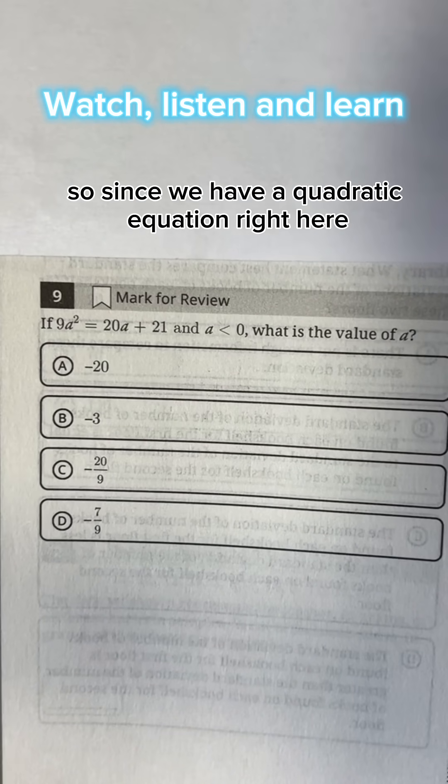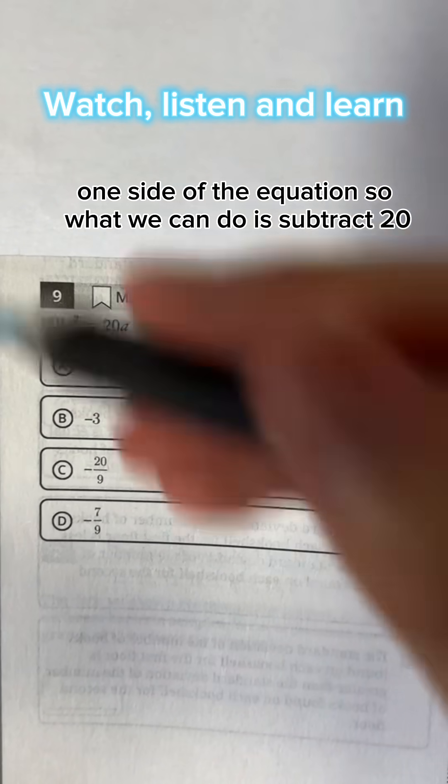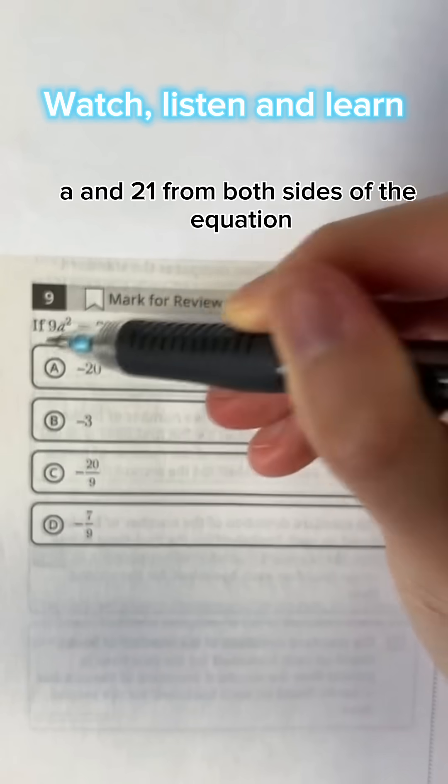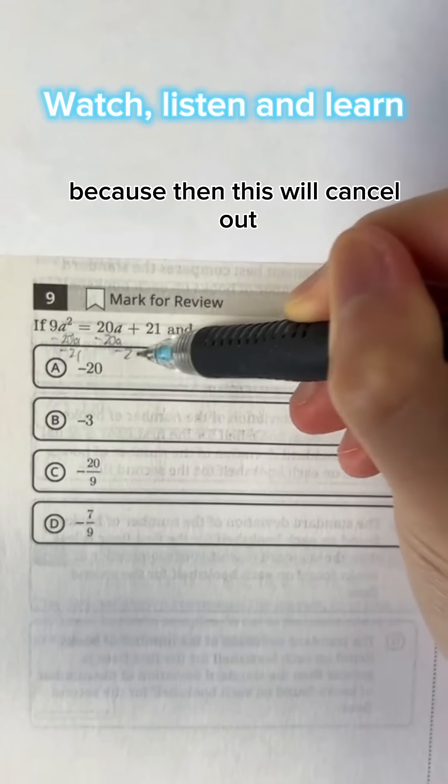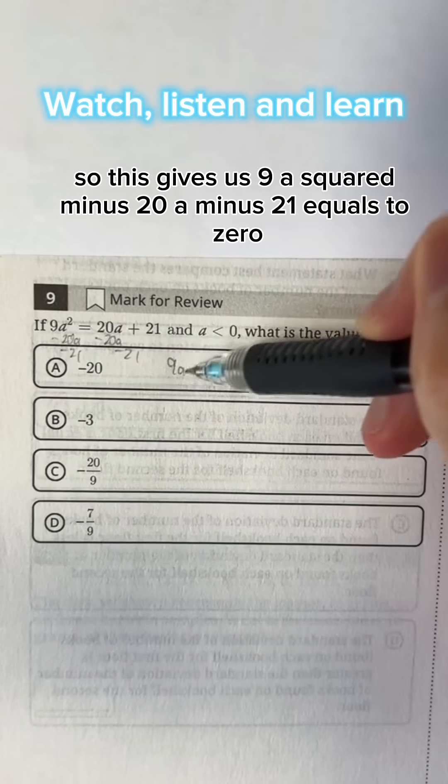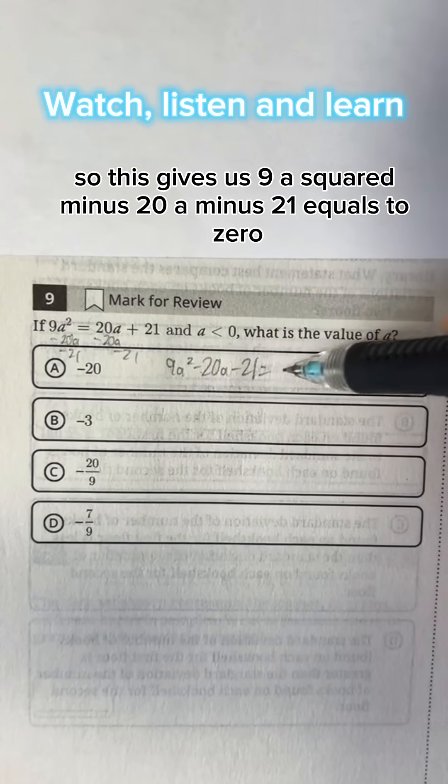Okay, so since we have a quadratic equation right here, what we should do first is get everything to one side of the equation. So what we can do is subtract 20a and 21 from both sides of the equation because then this will cancel out. So this gives us 9a squared minus 20a minus 21 equals 0.